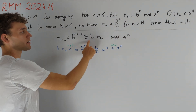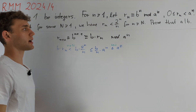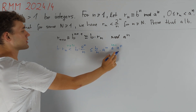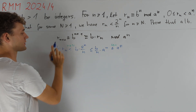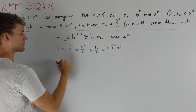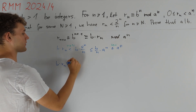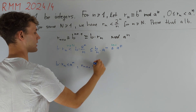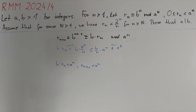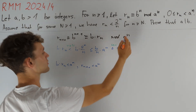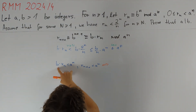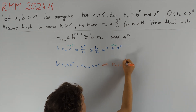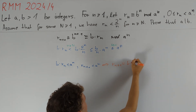Bounding the right-hand side from above was a very natural step in light of this condition. But now that we have this inequality, we are very motivated to try to prove the same thing for the left side. Because if we know that b times r_n is less than a^n and r_{n+1} is also less than a^n — we don't have this yet, but if this were true — then our congruence would immediately imply, because both things are non-negative, that the left-hand side and the right-hand side are equal, which is a lot stronger than the congruence itself.